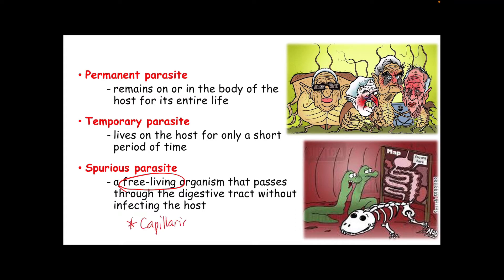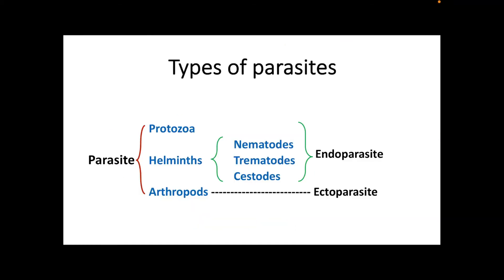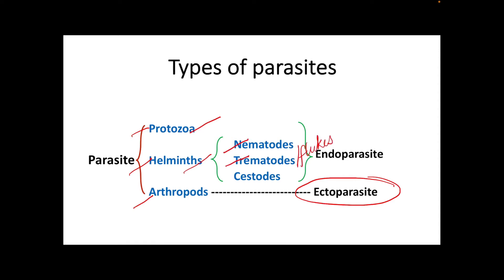To sum it up, we classify parasites generally as protozoans, helminths, and arthropods. Arthropods are considered ectoparasites — like bugs, mosquitoes, or flies. For endoparasites, we have the protozoans and helminths. For helminths, we have three general classifications: nematodes, trematodes (which are the flukes), and cestodes (which are the tapeworms).